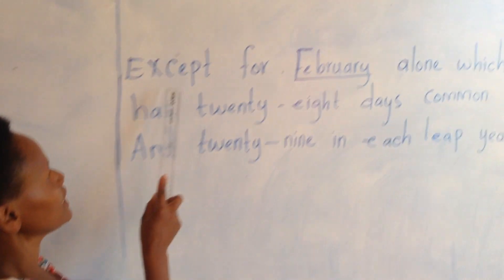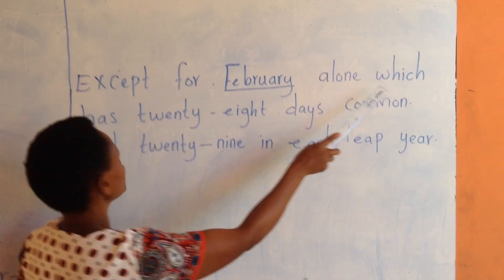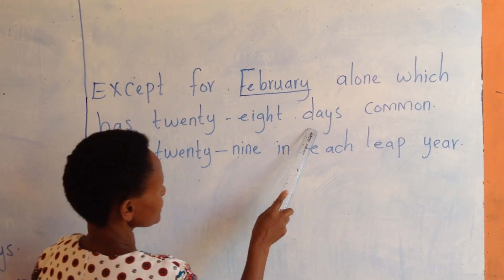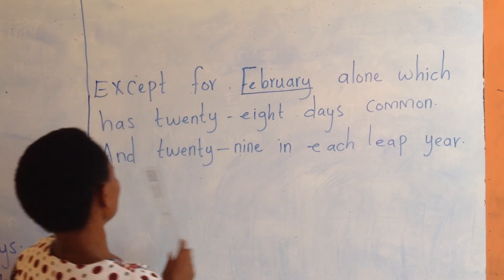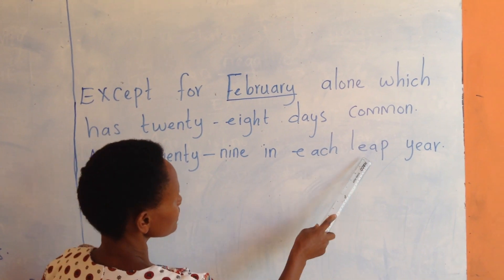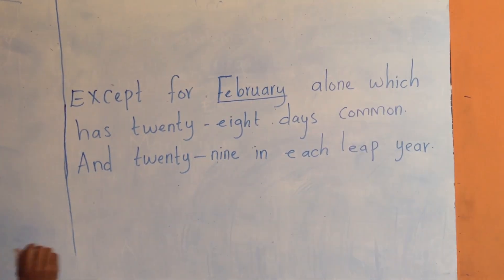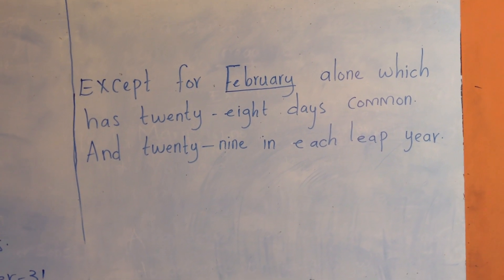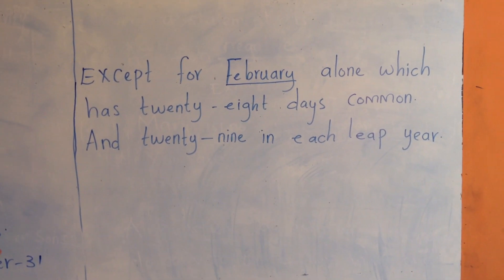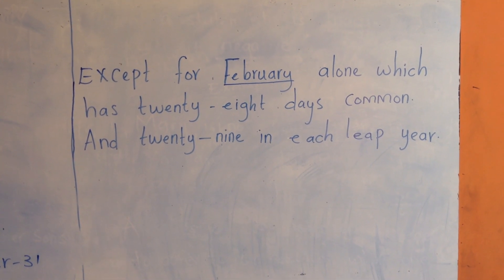Except for February alone, which has 28 days in a common year and 29 days in a leap year. It's only February that has 28 or 29 days.